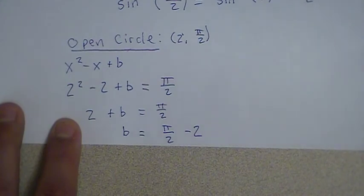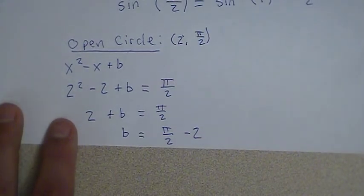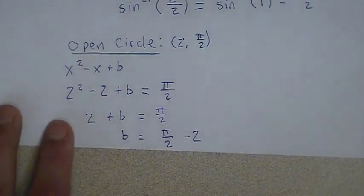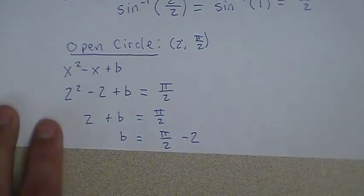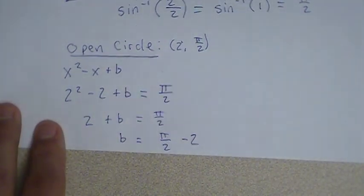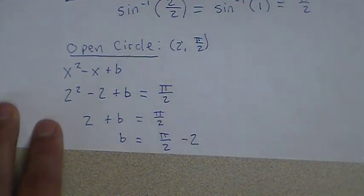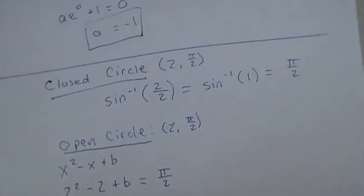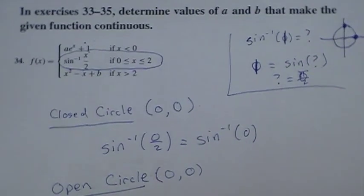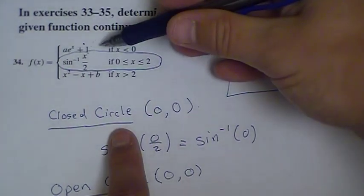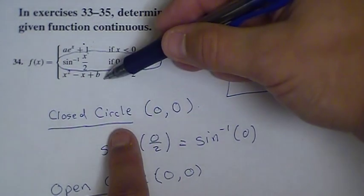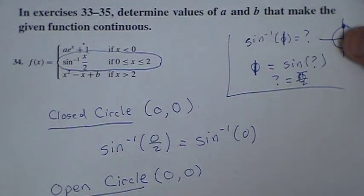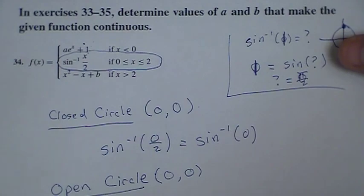So b = π/2 - 2. Problems 33 and 35 are going to be similar to this. You'll want to start by finding the location of either an open or closed circle, then make sure all your other open and closed circles connect with each other so there are no breaks in the graph as you move from one piece to the next. Hope this helps — let me know if you have any questions.